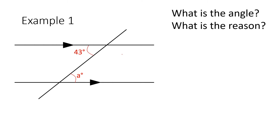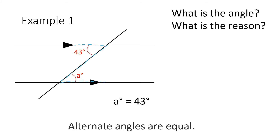Here's an example: what is the angle and what is the reason? Most questions will ask you to find an angle and give a reason. If we're talking about alternate angles, you can see that if I draw a dotted line here, I can create my Z shape, which creates my alternate angle. So A is equal to 43 degrees, and the reason is because alternate angles are equal.